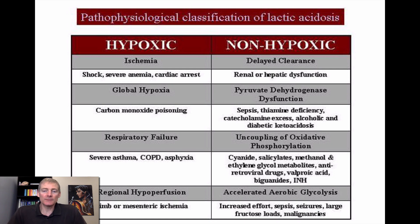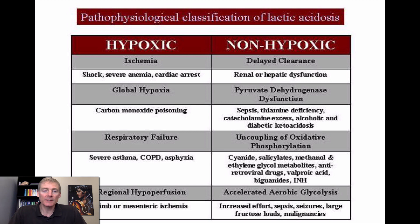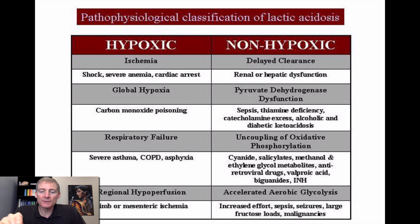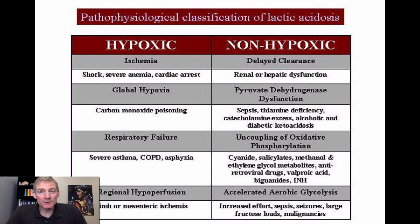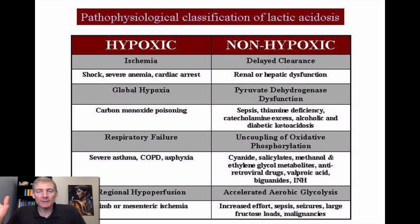This is the mechanism of chronic disease we're looking at right now. On the non-hypoxic side, go all the way down to the bottom — it says large fructose loads. Eating too much sugar, specifically fructose. That's fruit, and high fructose corn syrup also. That can cause non-hypoxic lactic acidosis, which is rampant.